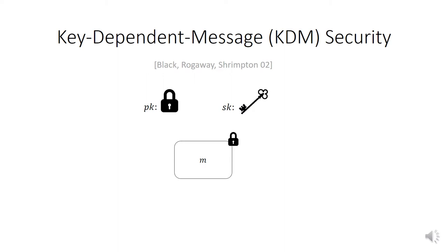But now consider a message that is the secret key itself. Then to hide the secret key, you need to rely on the security of the public key encryption scheme. And to argue security of the scheme, you need the secret key to be hidden in the first place. So there is a circular issue here. And in general, it's not clear whether semantic security of a public key encryption implies key-dependent message security.